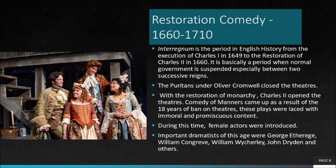Elizabethan drama was replaced by Restoration comedy or comedy of manners. This form of drama was a result of the puritanical regime headed by Oliver Cromwell. At the dusk of the golden era of the Elizabethan period, civil war broke out, as a result of which Charles I was executed in 1649. This period is the interregnum period in English history — from the execution of Charles I in 1649 to the restoration of Charles II in 1660. It is basically a period when normal government is suspended, especially between two successive reigns.